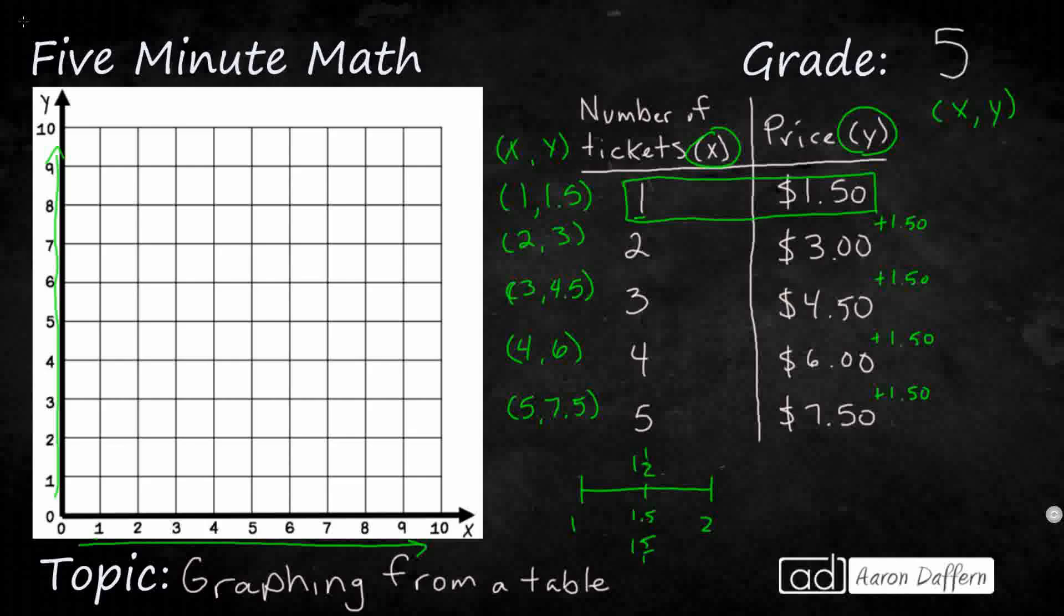Because one and five tenths reduces, simplifies to one and a half. So I'm just going to put that right here, and it's going to be halfway between 1 and 2 on the x value of 1. And I can label that right here: 1, 1.5.